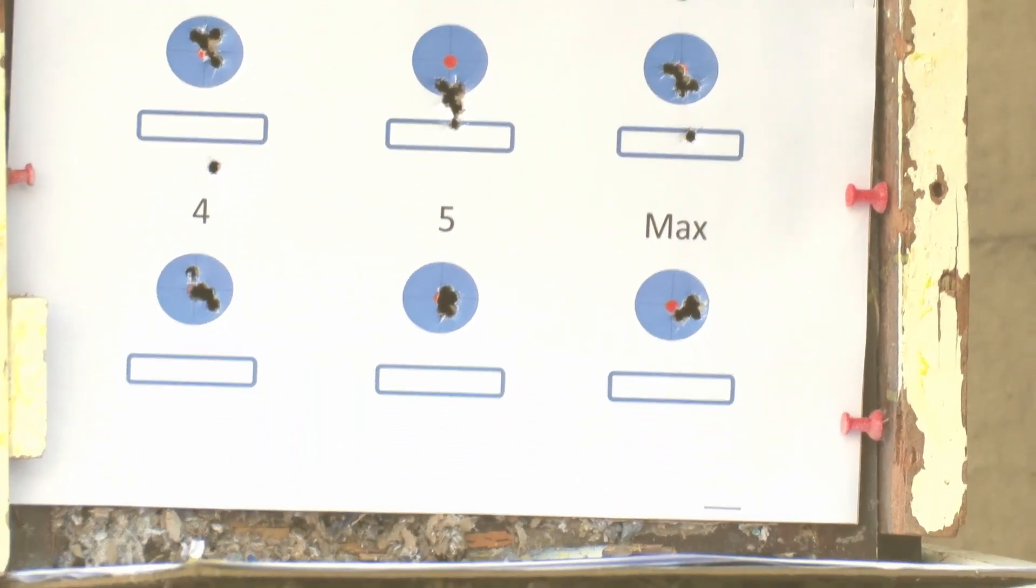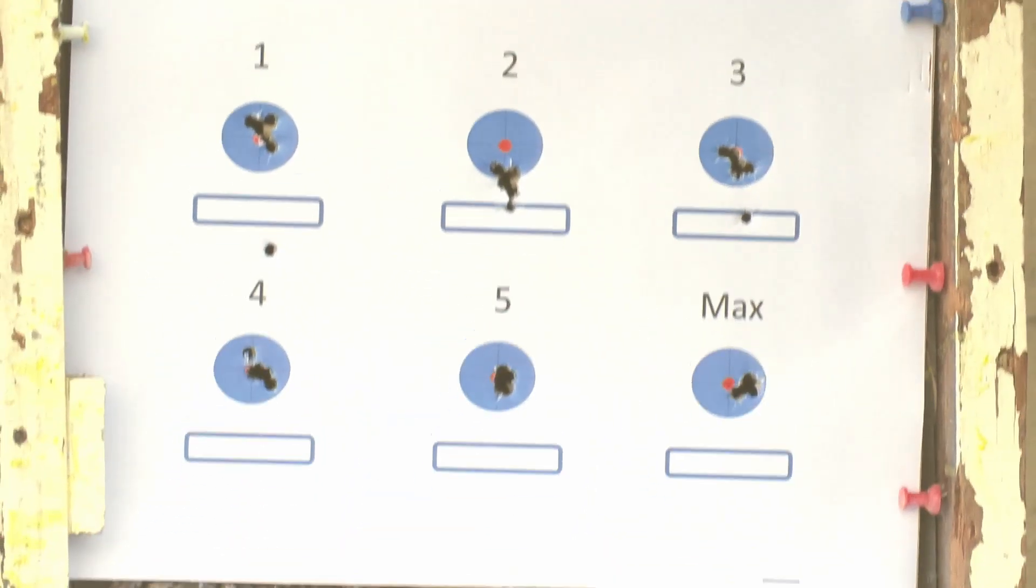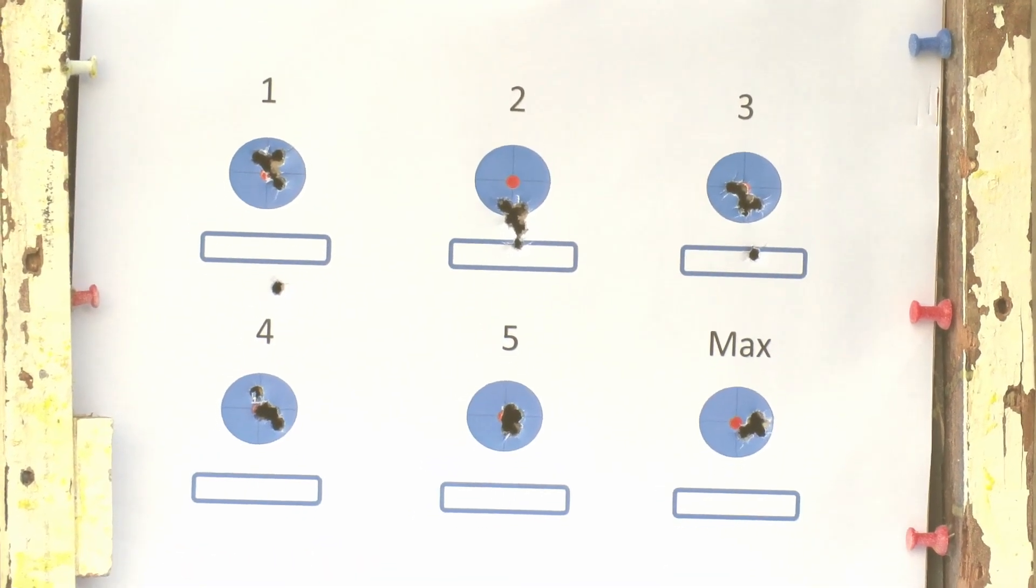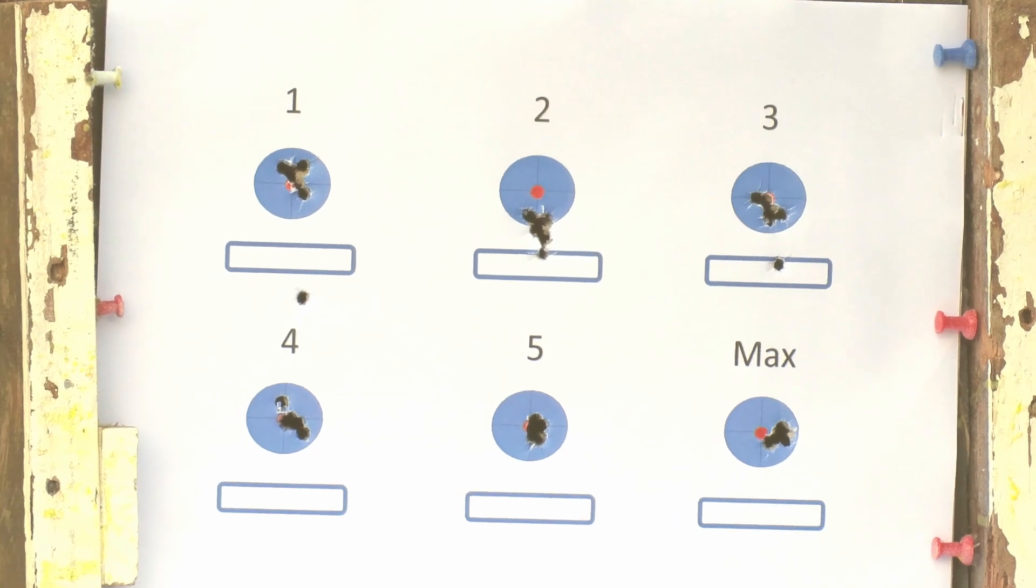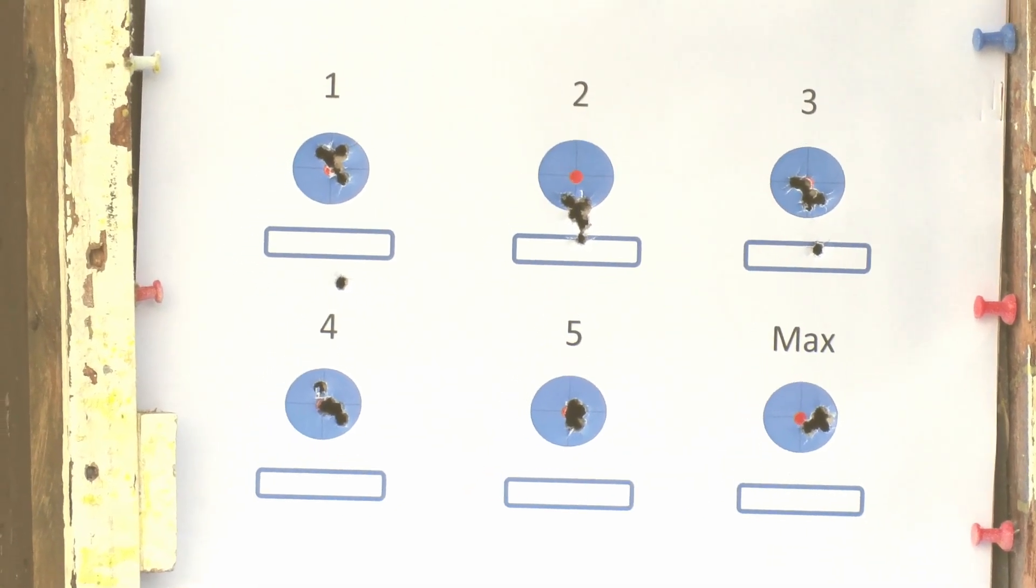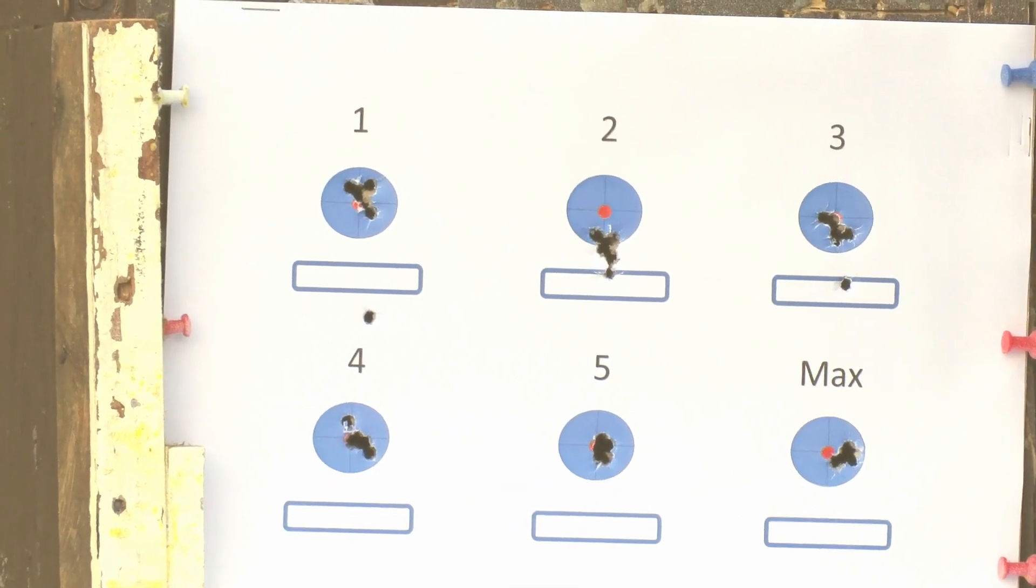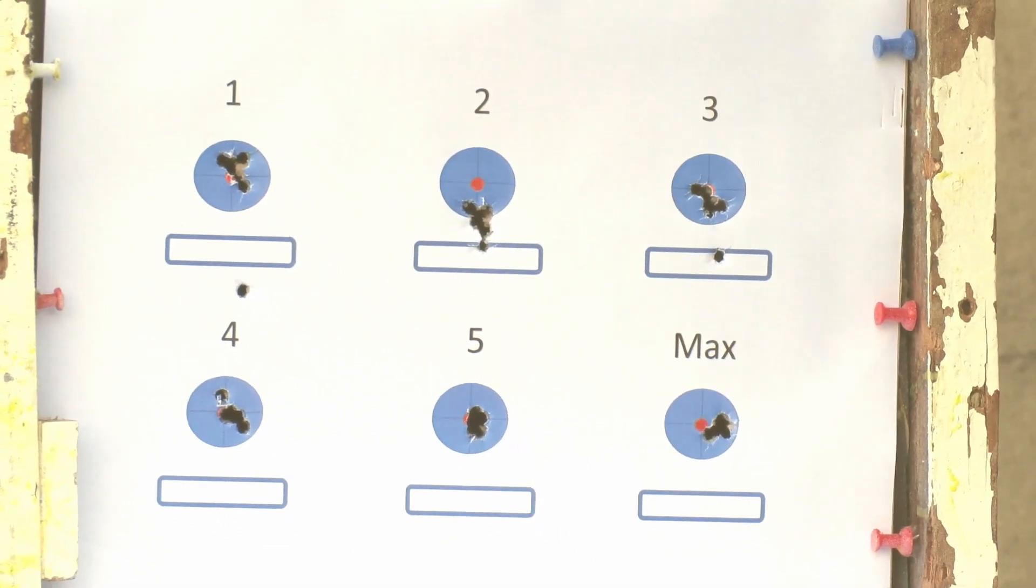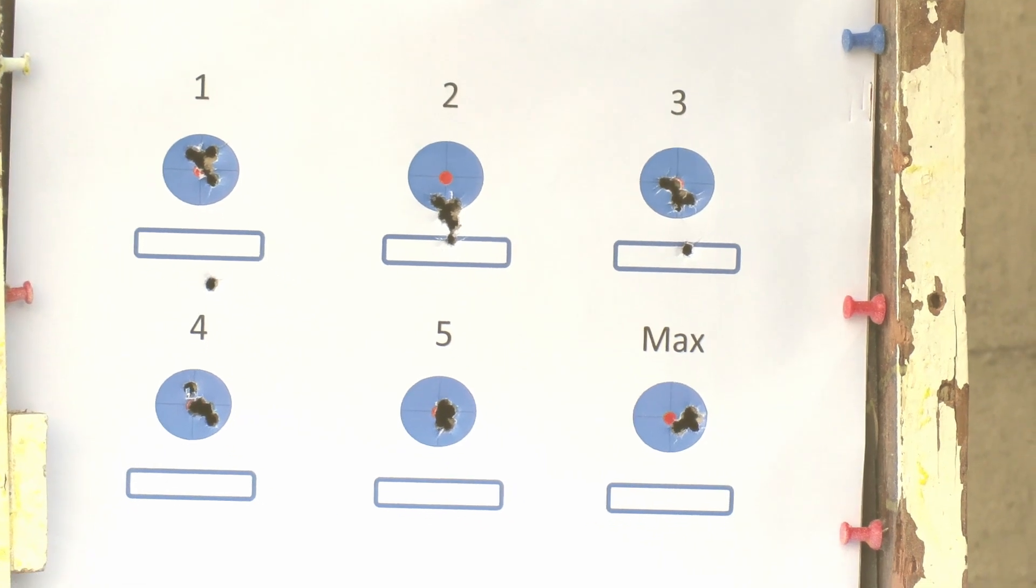Alright, so that's our initial six groups on the first target. Number one, that was on power setting one. You've got power setting 2, 3, 4, 5, and max. On number one I had to aim a full mil-dot high to get the center done. Number two and number three, four and five, and max, the whole bunch of them, I aimed half a mil-dot high.